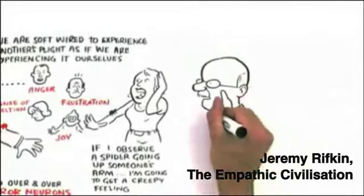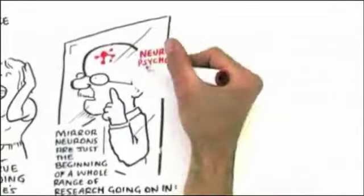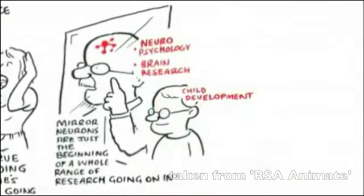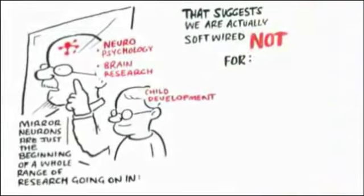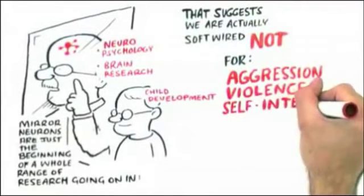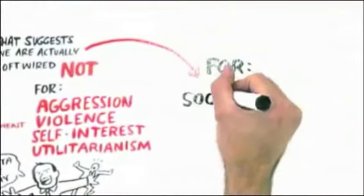But mirror neurons are just the beginning of a whole range of research going on in neuropsychology and brain research and in child development that suggests that we are actually soft-wired not for aggression and violence and self-interest and utilitarianism, that we are actually soft-wired for sociability,